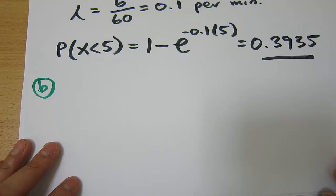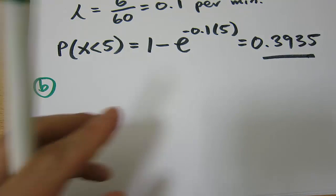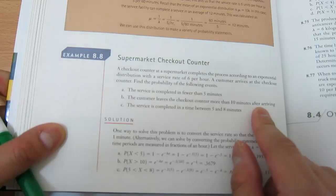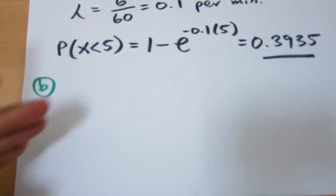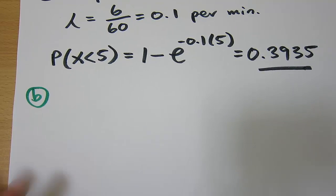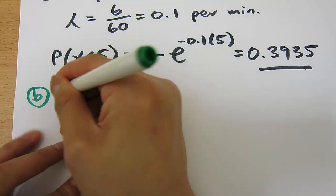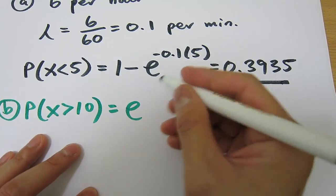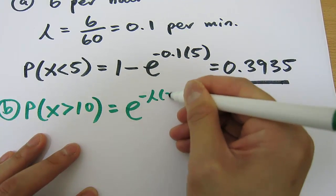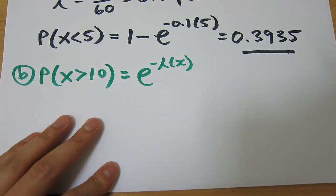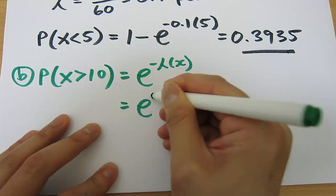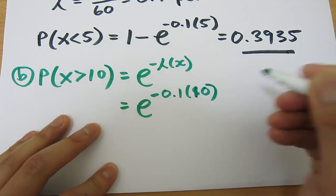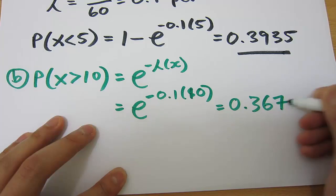The next question asks for the probability that it takes more than 10 minutes to complete a customer's checkout. The probability that x is greater than 10 equals e to the power of negative lambda times x, which is e to the power of negative 0.1 times 10. That gives us 0.3679.